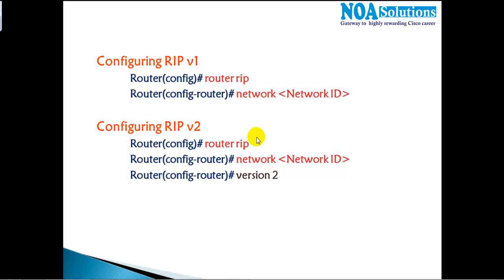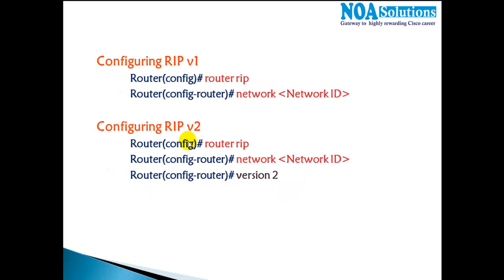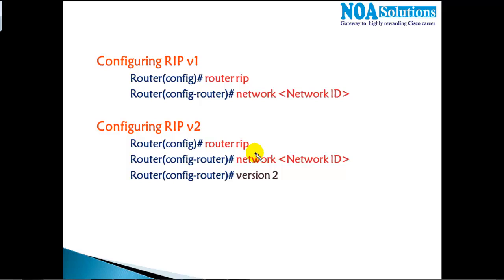In this section we'll see how to configure the RIP protocol and also cover some of its advantages and disadvantages. To configure RIP, we just need to go to the router and use the command 'router rip' — or 'router ospf', 'router eigrp', whichever dynamic routing protocol you want to use.